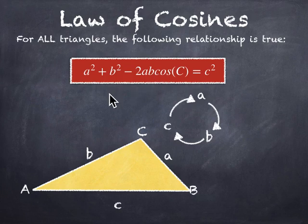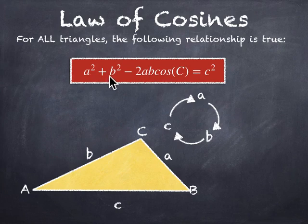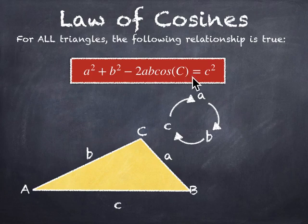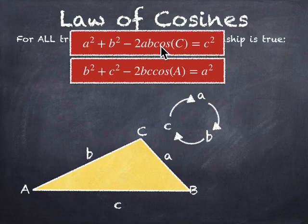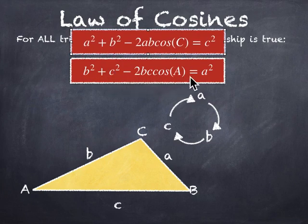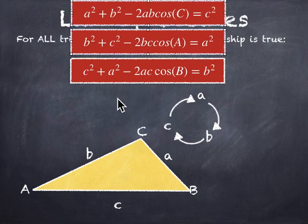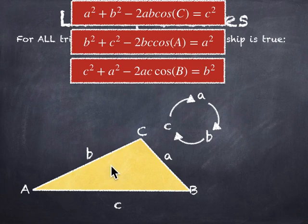Now the law of cosines is published like this, but comes in a variety of different flavors. You can cycle the sides through — turn all the a's into b's, all the b's into c's, and all the c's, including the angle, into a's — and you get another just as true equation: b squared plus c squared minus 2bc cosine of A equals a squared. You could do that again and get a third equation. In general, it doesn't even matter that things are called a, b, and c. The important thing is that whatever angle you use, you put the opposite side on the opposite side of the equation.